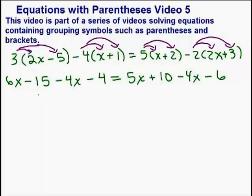So now on the left-hand side and on the right-hand side, we want to simplify by combining like terms. On the left side, we've got 6x minus 4x, that gives us 2x. And negative 15 minus 4, that's negative 19. On the right side, we've got 5x minus 4x, which is just x or 1x, and plus we've got 10 minus 6, which is plus 4.